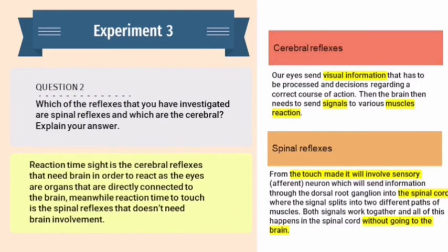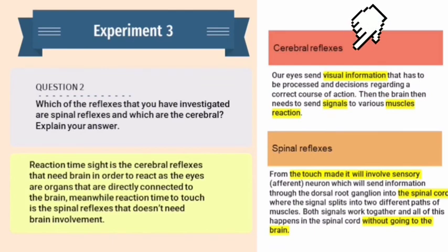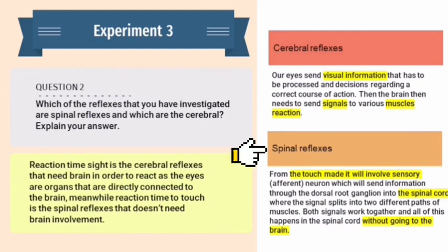The next question is: which of the reflexes investigated are spinal reflexes and which are cerebral? Reaction time to sight is a cerebral reflex that needs the brain in order to react, as the eyes are organs directly connected to the brain. Reaction time to touch is a spinal reflex that does not need brain involvement. For cerebral reflexes, the eyes send visual information to be processed and a decision is made, then the brain sends signals to various muscles. For spinal reflexes, the touch involves a sensory neuron sending information through the dorsal root ganglion into the spinal cord, where the signal splits into two pathways. Both signals work together and all processing happens in the spinal cord without going to the brain.